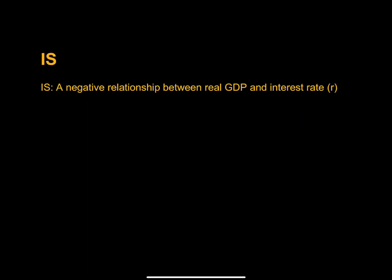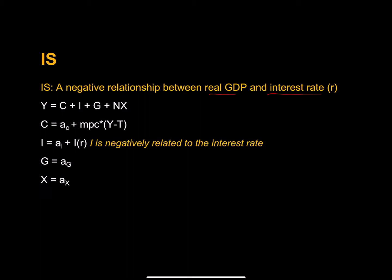So let's clean this up and take a look here. We are shooting for a negative relationship between real GDP and the interest rate. We have consumption, investment, government purchases, exports and imports. And we have some component here that's negatively related to the interest rate. Unless you care about deriving the IS curve, go ahead and fast forward to the point where I plot it. But if you'd like to follow along with me, what I'm going to do next is derive real GDP as a function of all of these autonomous components and the real interest rate.